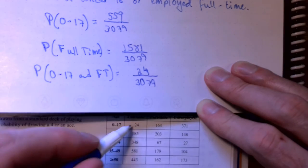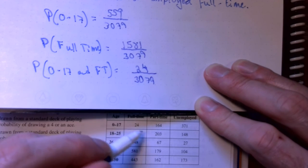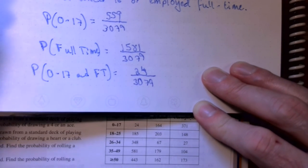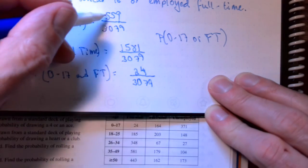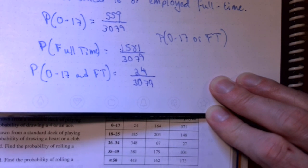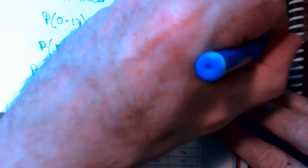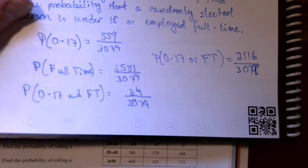The probability of the overlap, somebody being under 18 and employed full-time, well, that's right there. That's those 24 people. So, the probability of 0 to 17 or full-time, I would take this plus this minus this. So I do 559 plus 1581 minus the 24 that was in both counts. And I get 2,116 out of 3,079. So it's an application of the so-called addition rule.